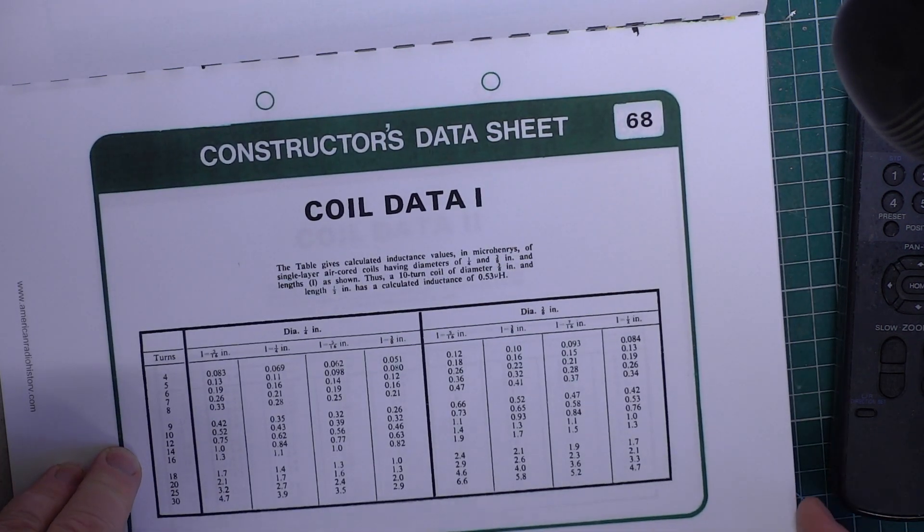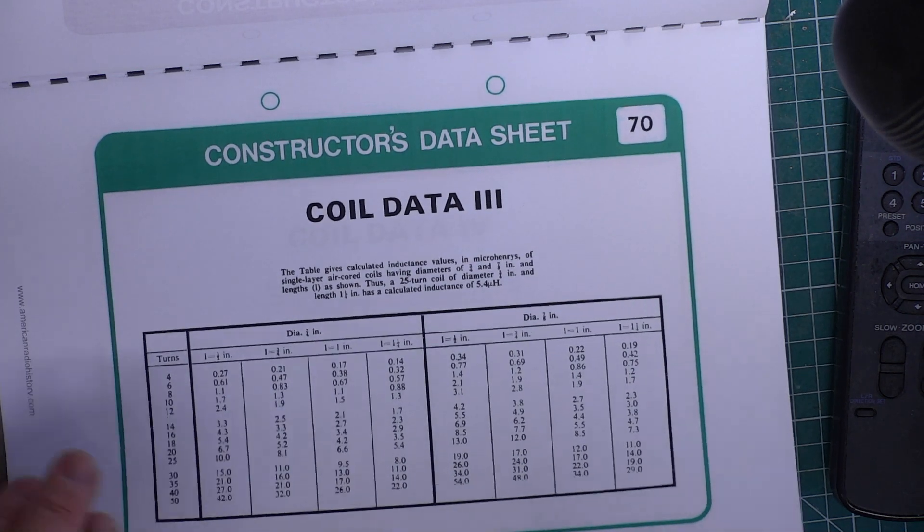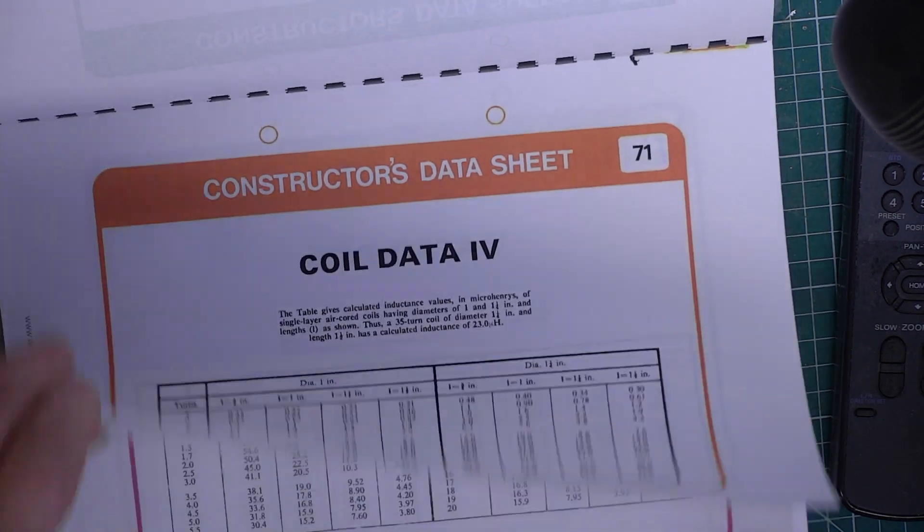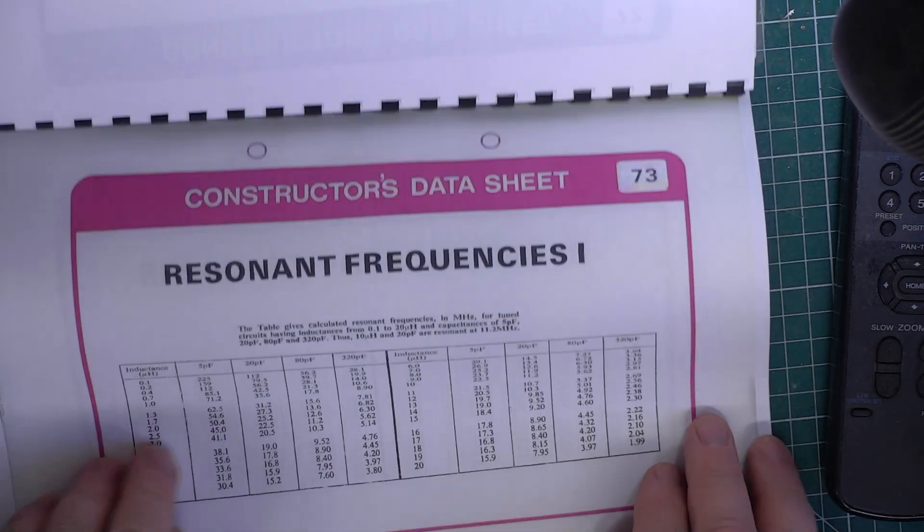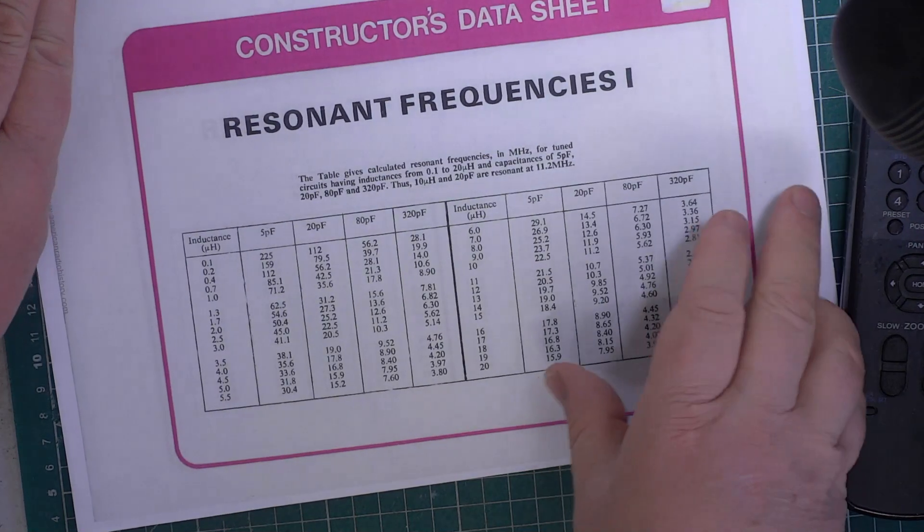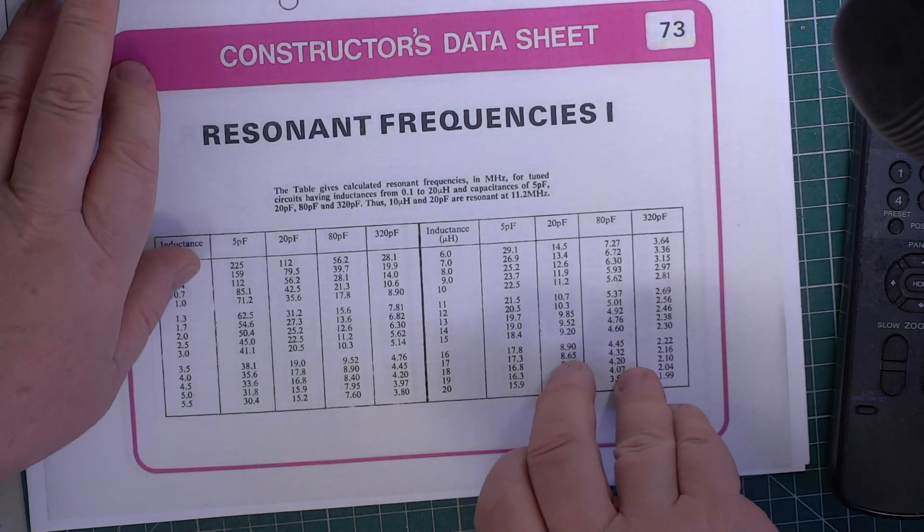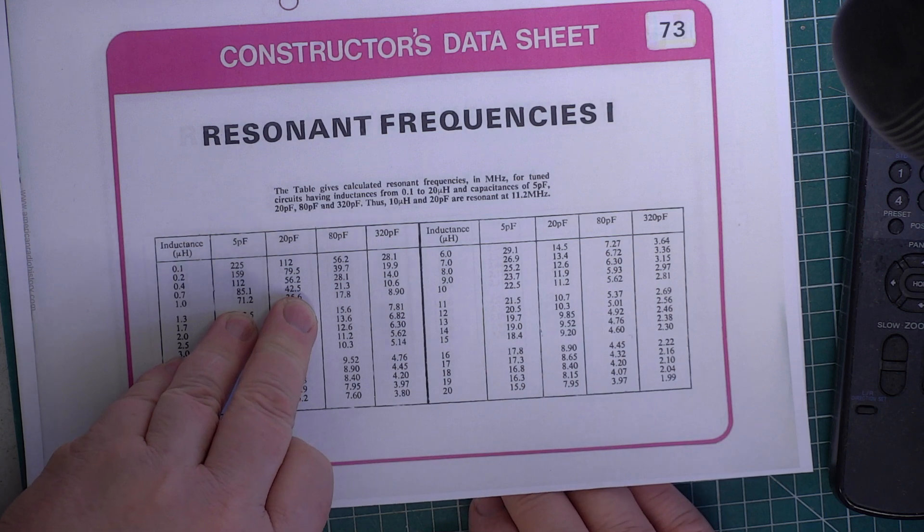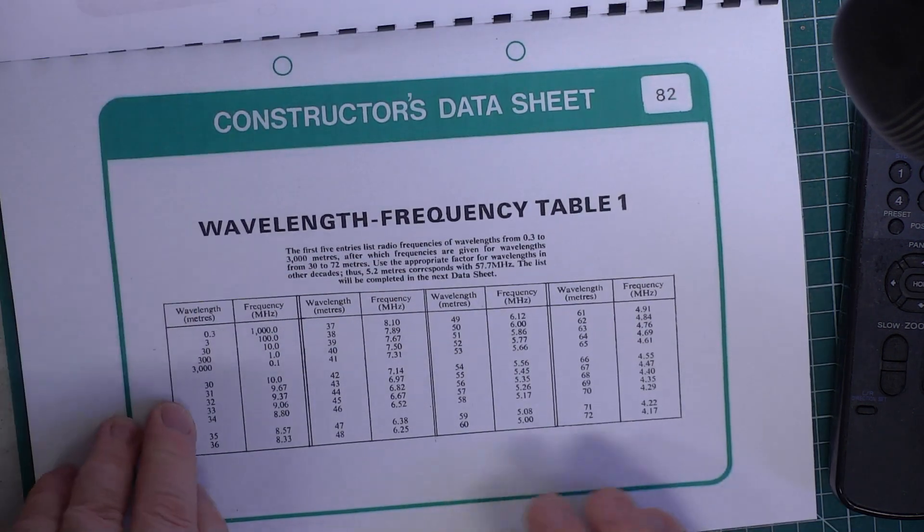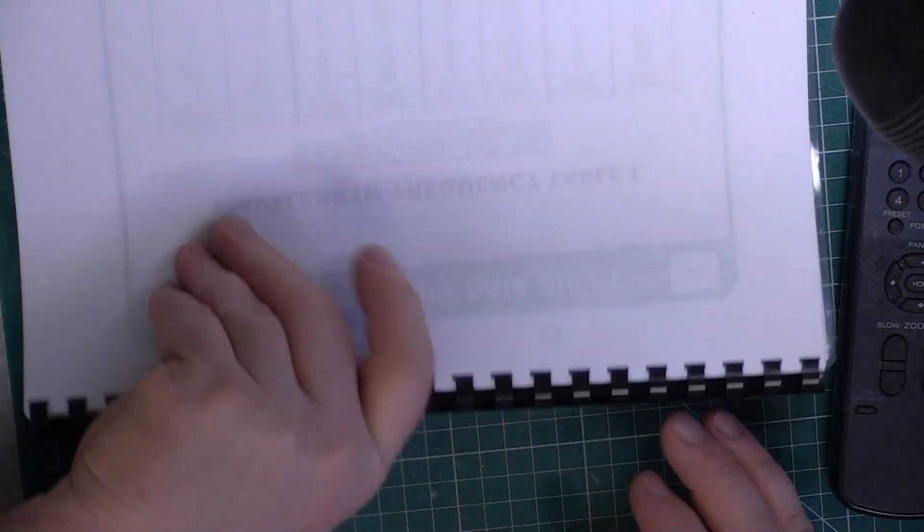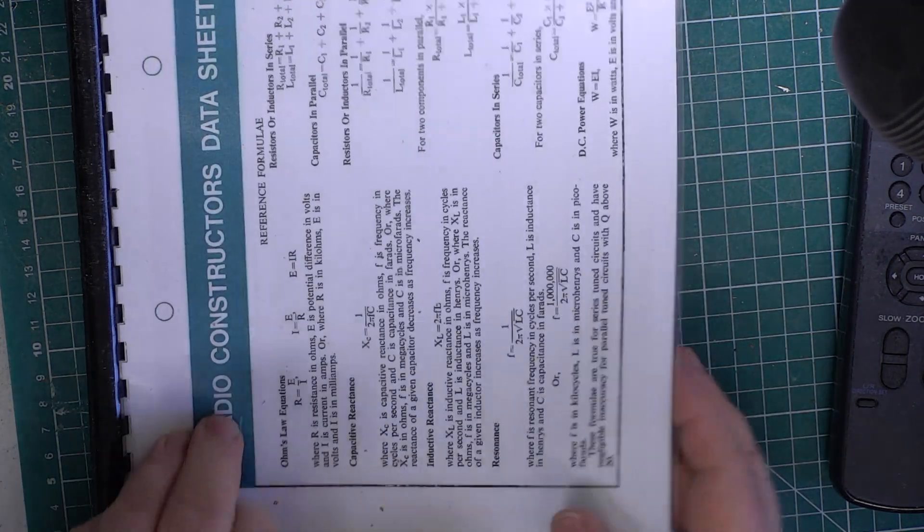Coil data. So this is microhenries, how many turns. There's worked examples for 1.3 microhenries, 5.4 microhenries, 23 microhenries. More coil data. 26 microhenries. Resonant frequencies. Megahertz for tuned circuits having inductance from 1 to 20 microhenries and capacitance from 5 to 320. Resonant frequencies 2. And that's as far as we've got. I've just plonked in the odd one. There's a wavelength to frequency table. So that is useful data. There was an index. I'll put that to it when I get to it. I've stopped at 70. There's a reason I've stopped at 75.